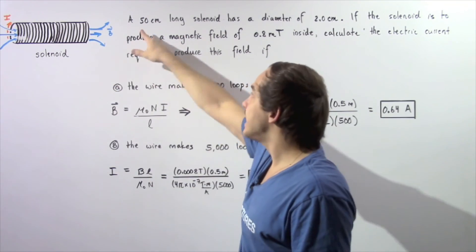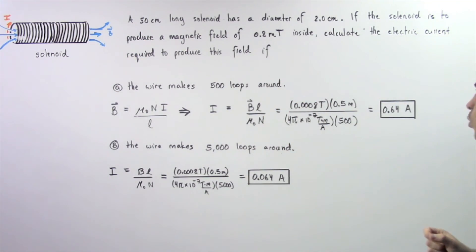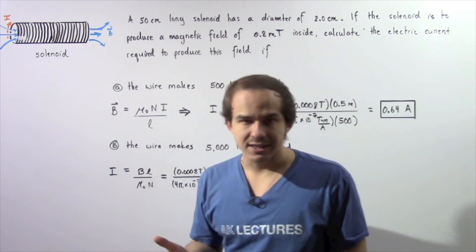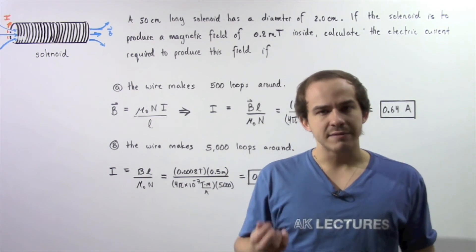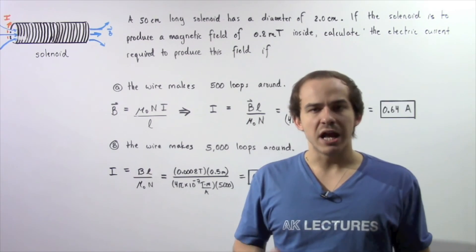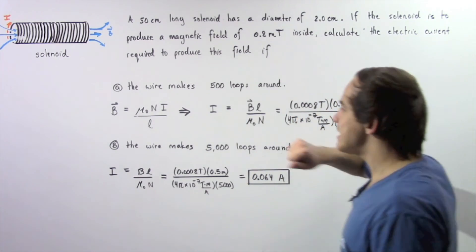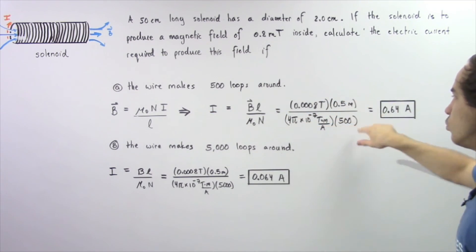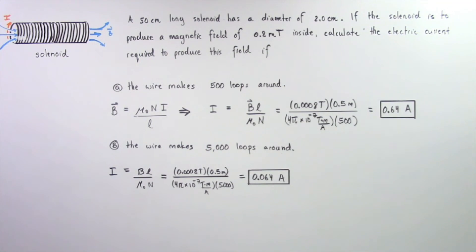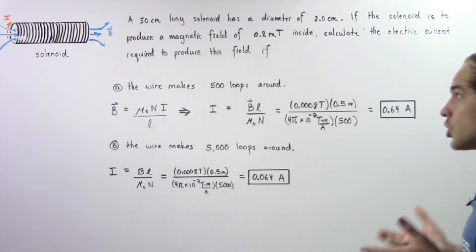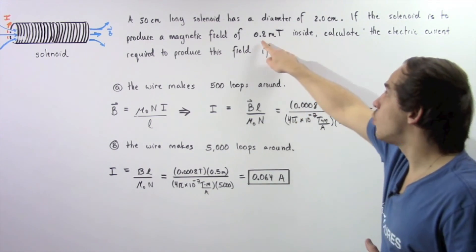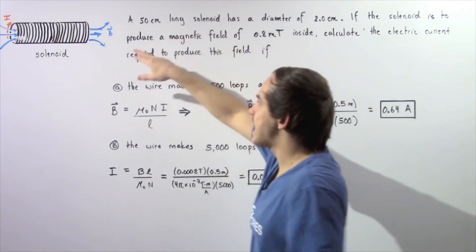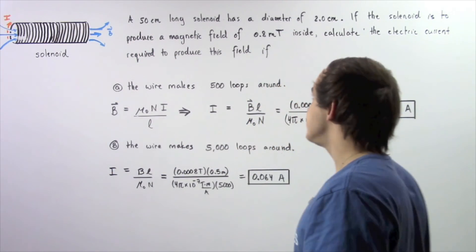Mu naught, the permeability of free space, is a constant with a value of 4π times 10 to the negative 7 tesla·meters per amp. Our N is 500 loops. Multiplying and dividing these values, we get approximately 0.64 amps as our electric current — the current required to produce 0.8 milliteslas when the solenoid has 500 loops over a length of 50 centimeters.